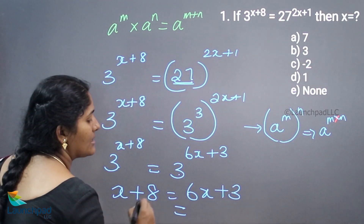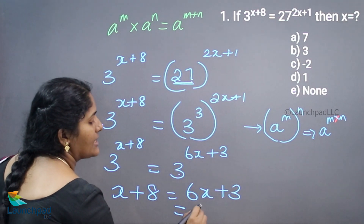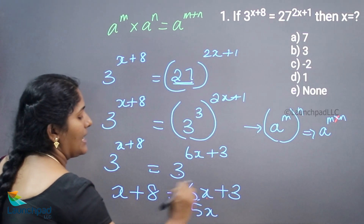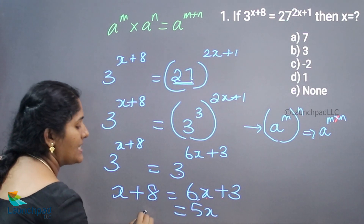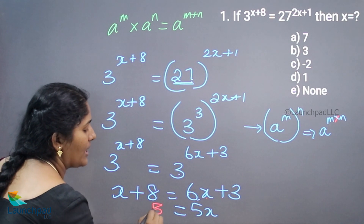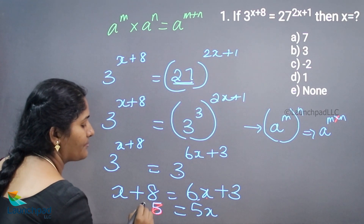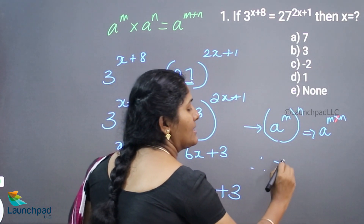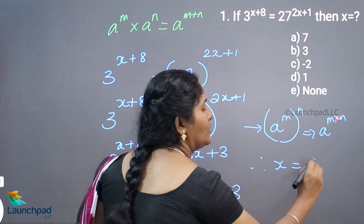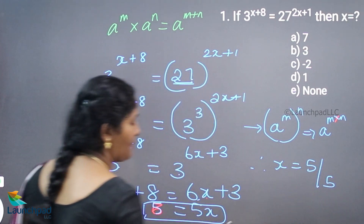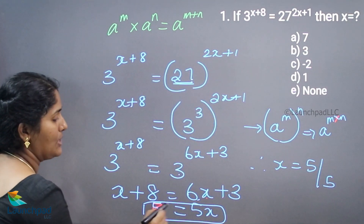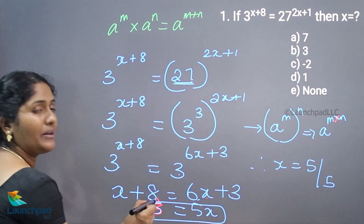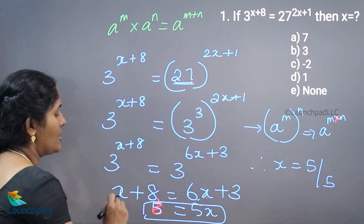Hence, x plus 8 is equal to 6x plus 3. So 6x minus x is 5x, and 8 minus 3 is 5. Therefore x is equal to 5 divided by 5. Bringing the 3 to the other side gives us 8 minus 3.